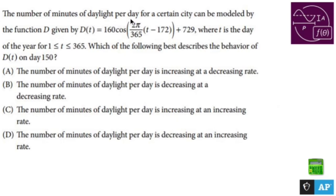The number of minutes of daylight per day for a certain city can be modeled by the function D given by D(t) equals 160 cosine [formula details] plus 729, where t is the day of the year. Which of the following best describes the behavior of D(t) on day 150?